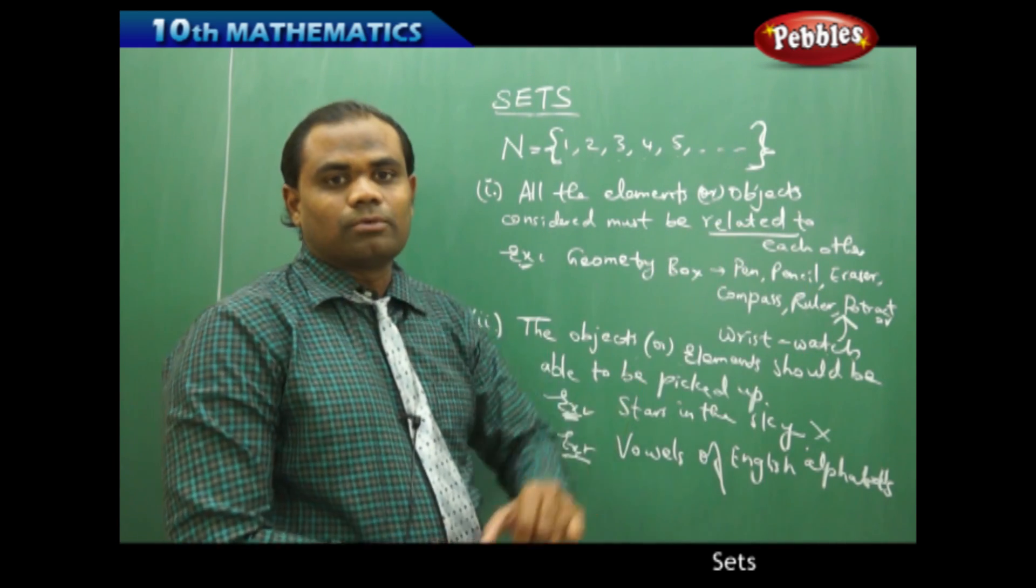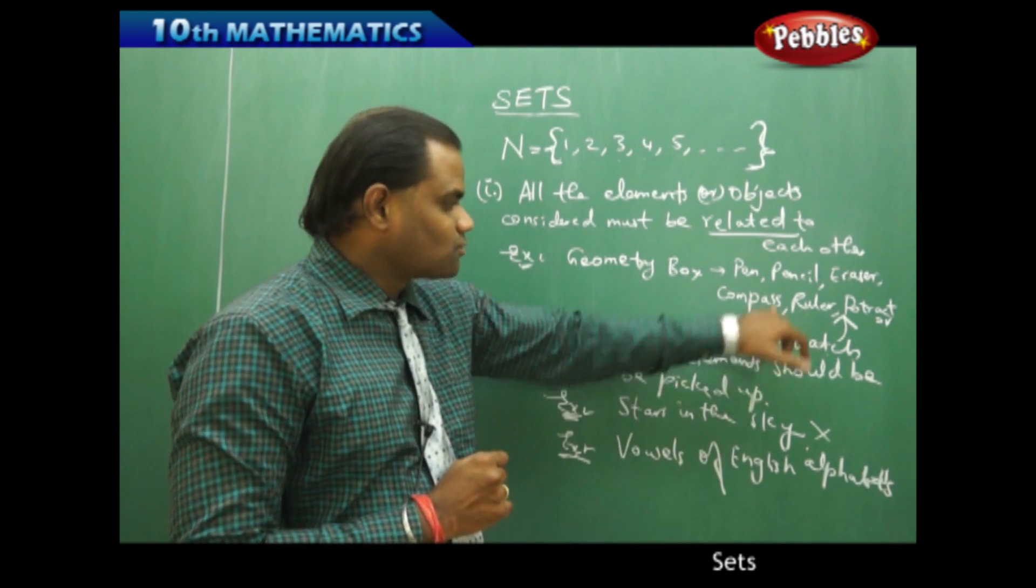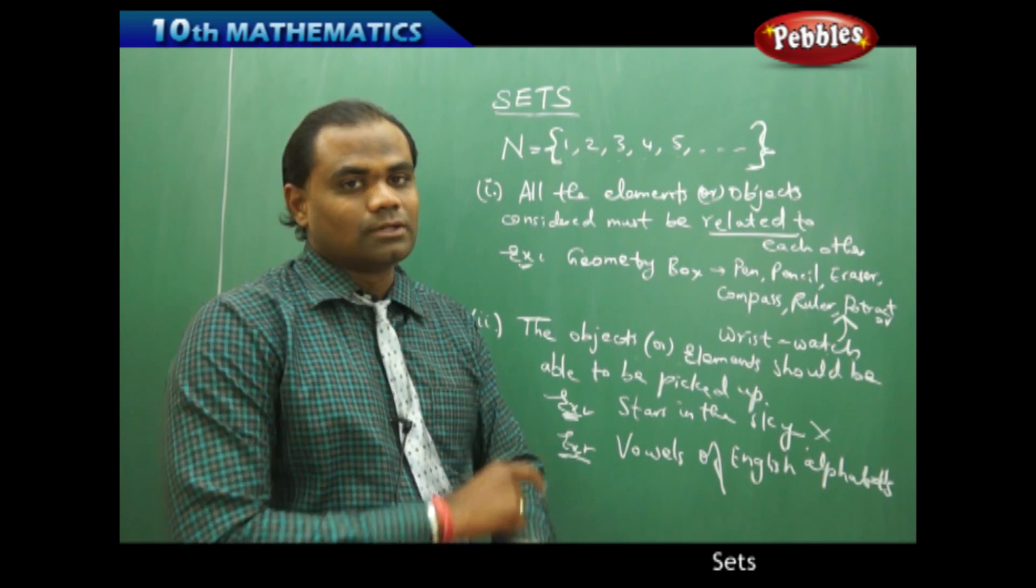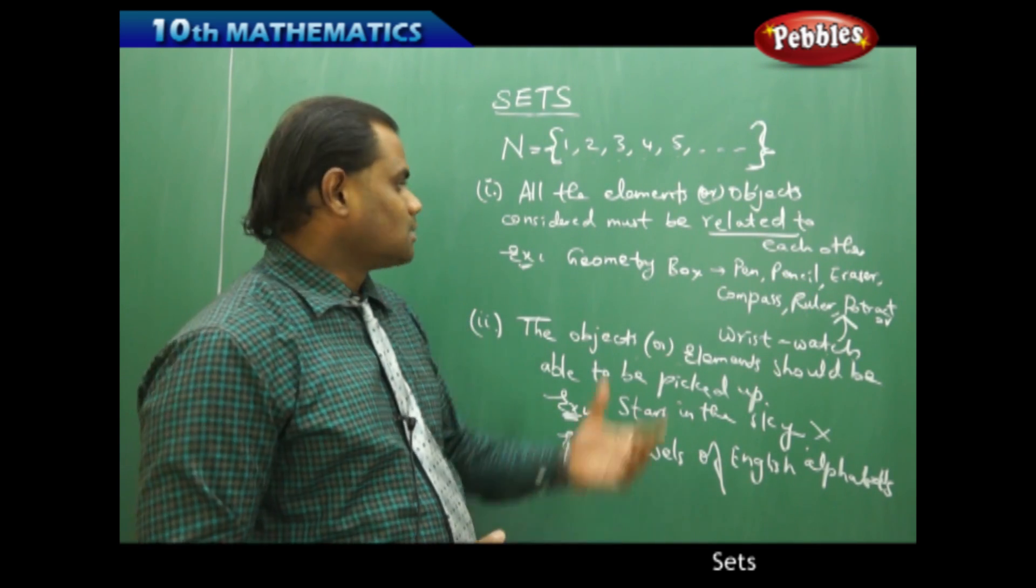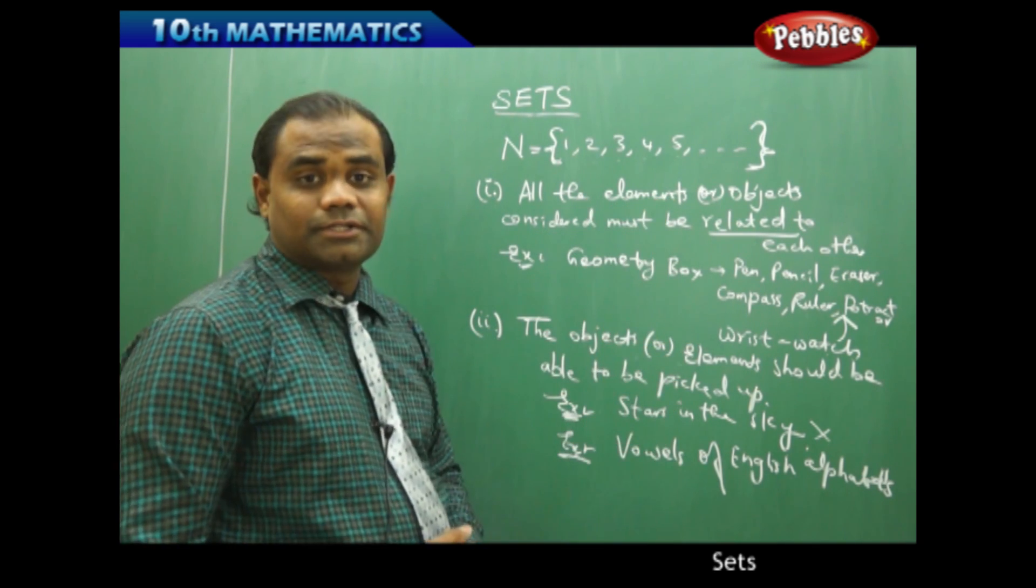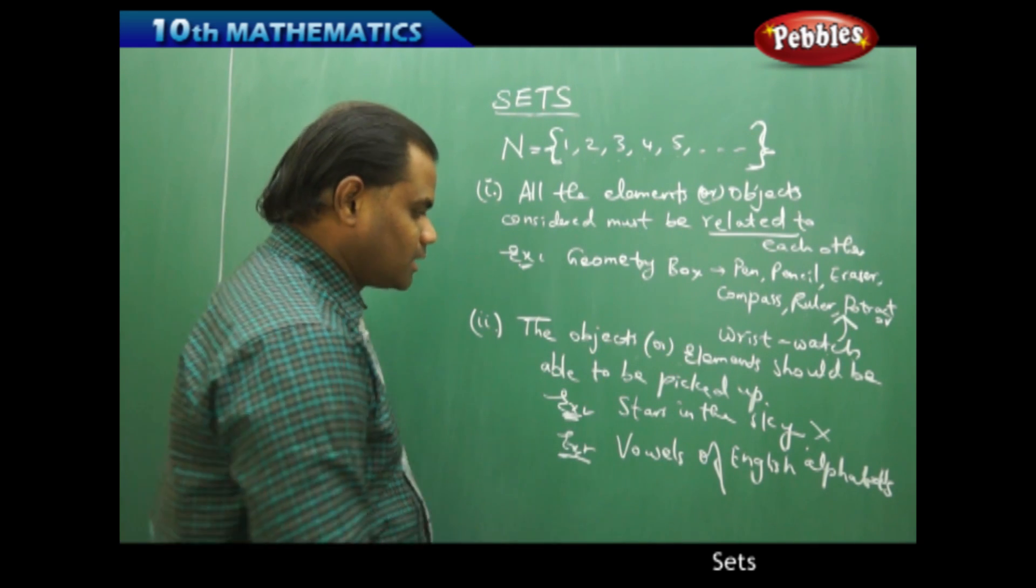The instruments in the geometry box form a set, but when a wrist watch is included in the geometry box, it does not form a set. Supported with the limitation 1 and the limitation 2.